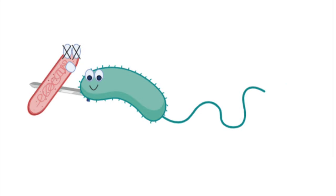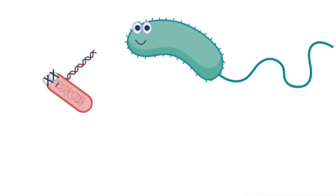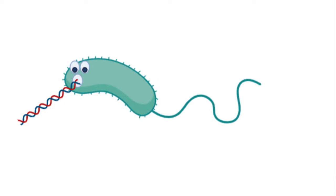Vibrio cholerae uses a type 6 secretion system, which means when it gets close to its prey, the spear punches a hole into them, which kills the bacteria and makes the dead bacteria release its DNA.